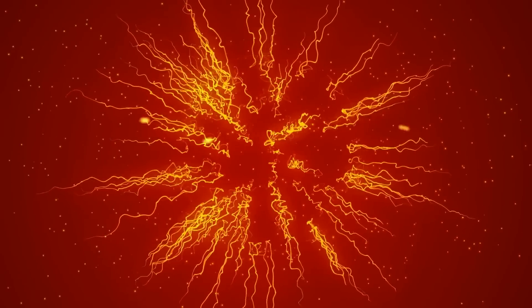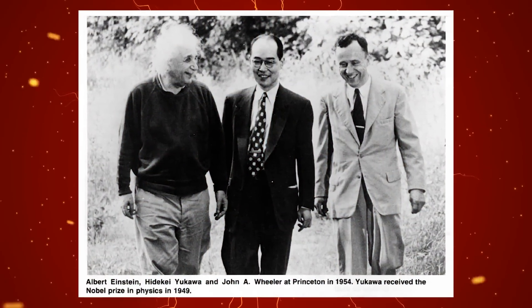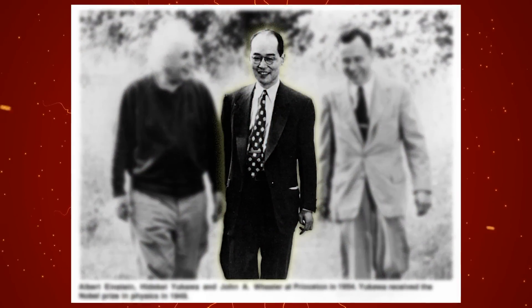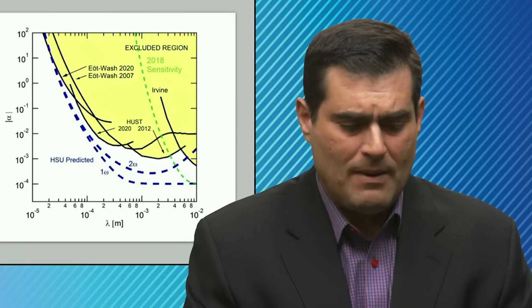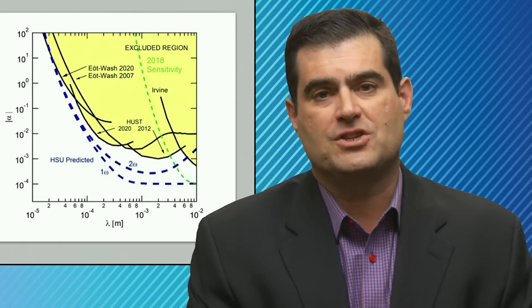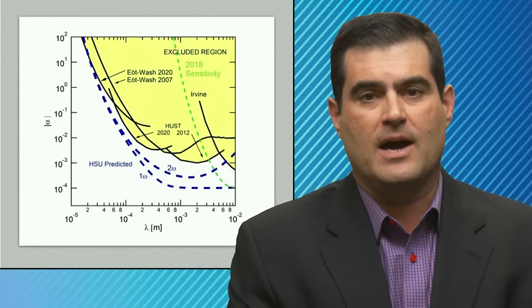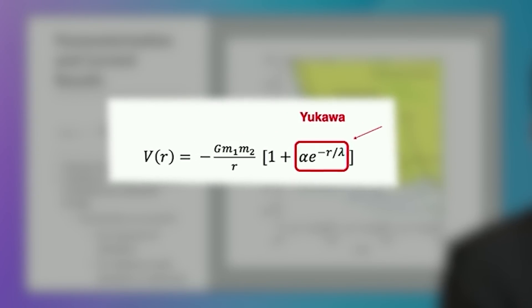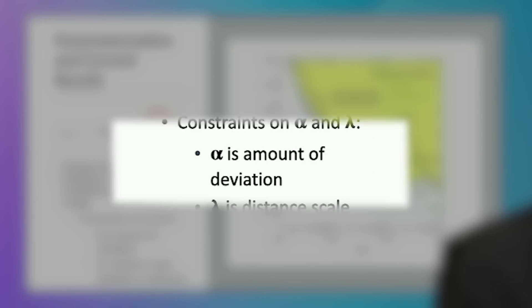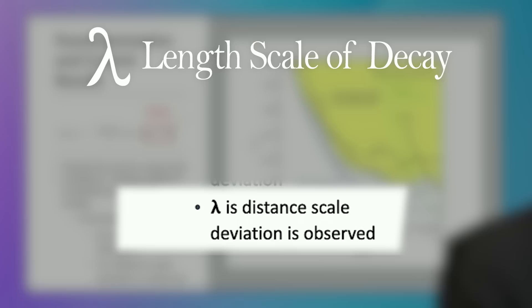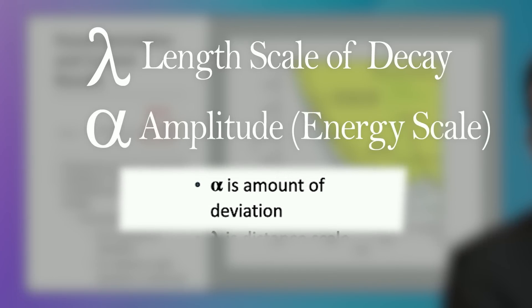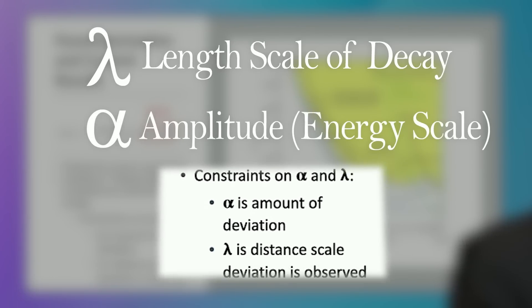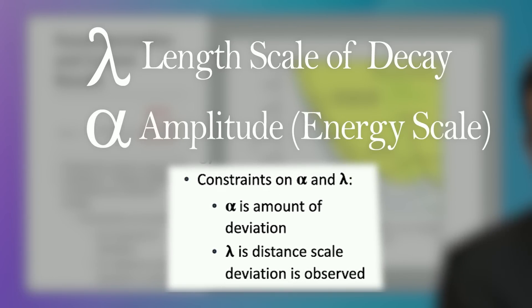That was governed by a Yukawa term that fell off as an exponential, not as an inverse power law. So by modifying the coupling from just being 1 inside the square brackets to being 1 plus this exponentially decaying term, which is parameterized by two numbers—the length scale over which it decays, which is lambda, and some amplitude, which is an energy scale, which is alpha—you have this two-dimensional parameter space, alpha and lambda.